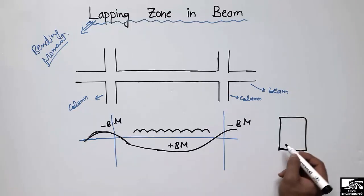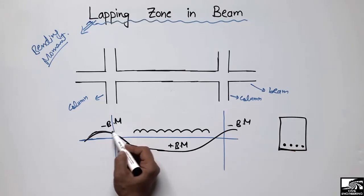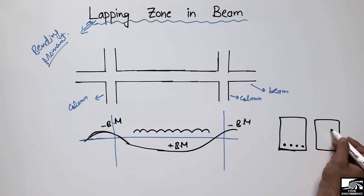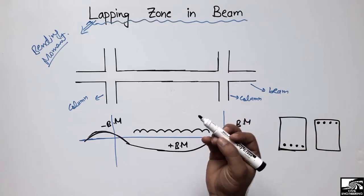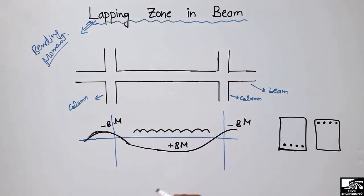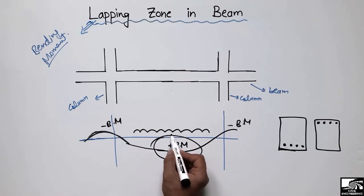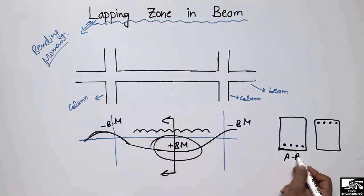For the positive bending moment we provide the reinforcement at the bottom of the beam, while for the negative bending moment we have a separate section at the support where we provide the top reinforcement. So what should be the lapping zone for the beam if we have positive and negative bending moment? For the positive bending moment, the critical section is the mid-span because the maximum bending moment is at the mid-span of the beam — this will be section AA.